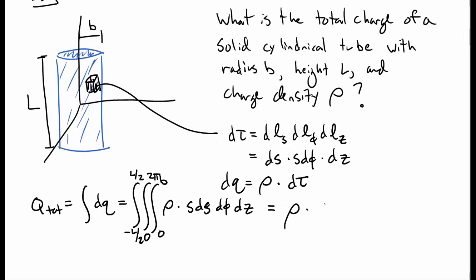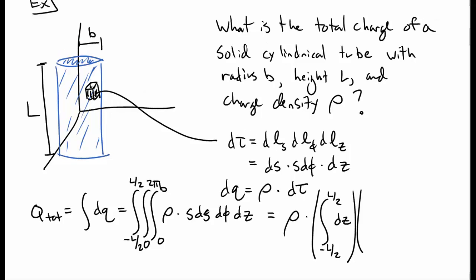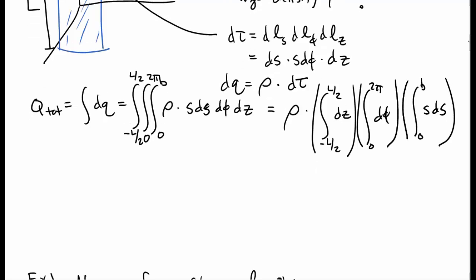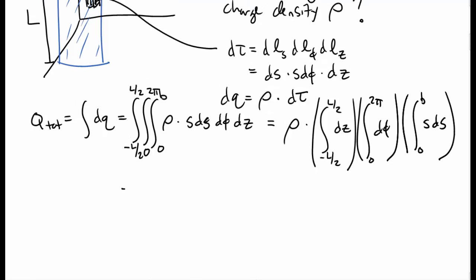Okay, so these are three separate integrals. We can pull rho out of all of them. We have negative l over 2 to l over 2, the integral of dz. We have the integral over d phi from 0 to 2 pi, and the integral over s from 0 to b. All of these integrals are easy to do. We just multiply the results. And so we get rho times l, 2 pi, and then a factor of 1 half b squared.